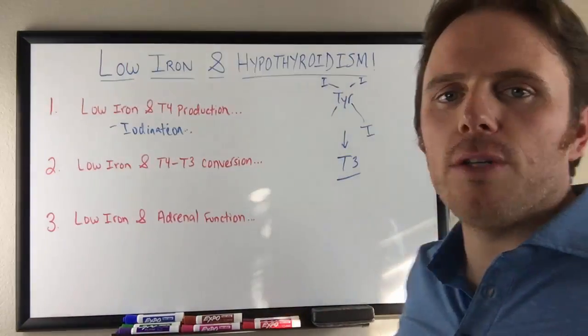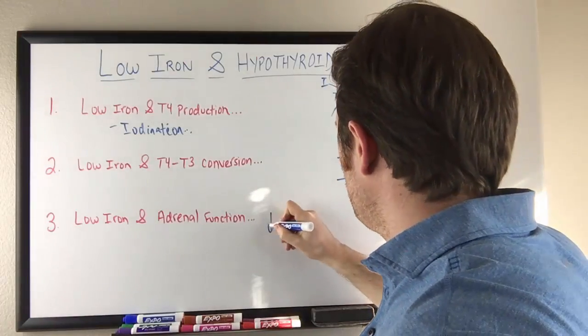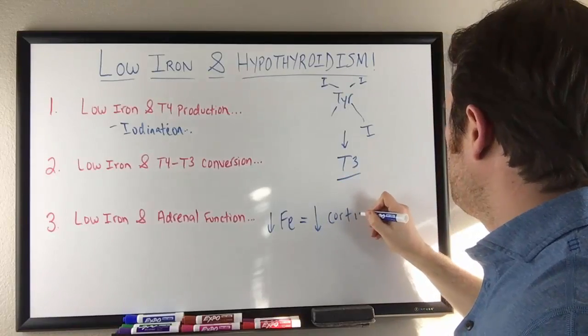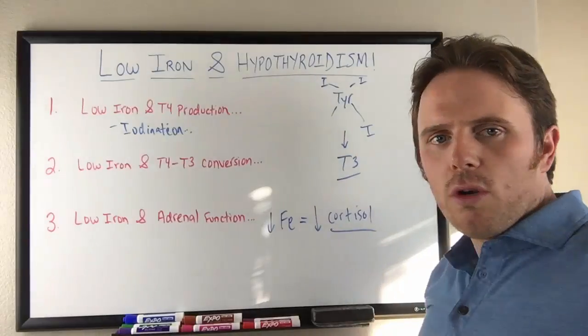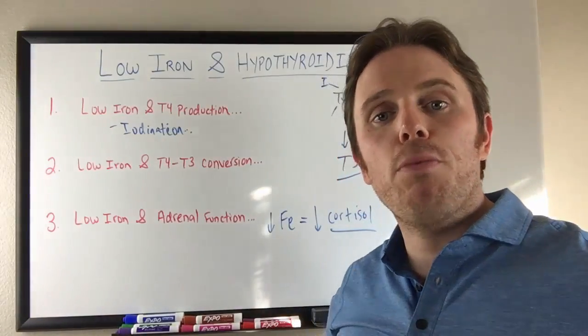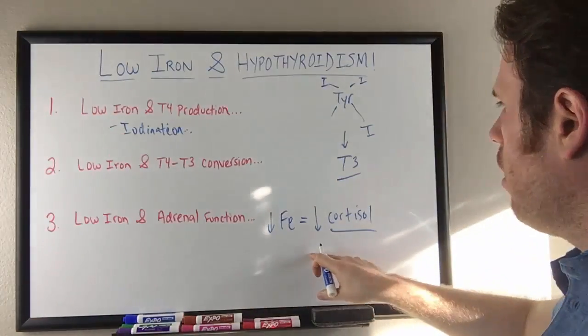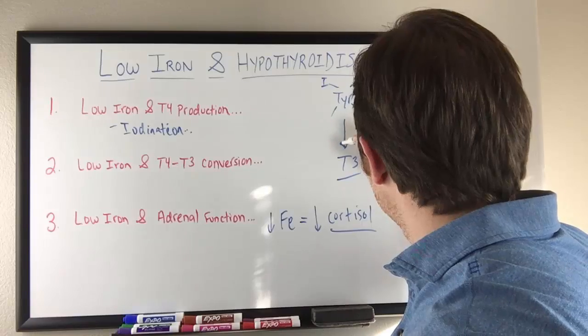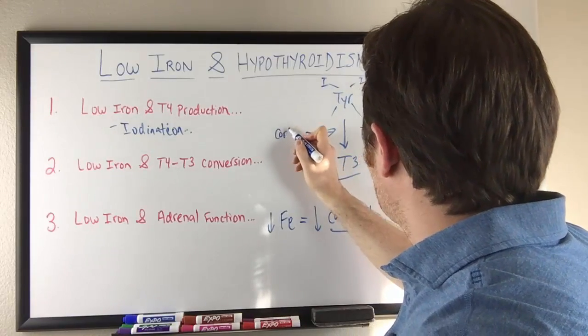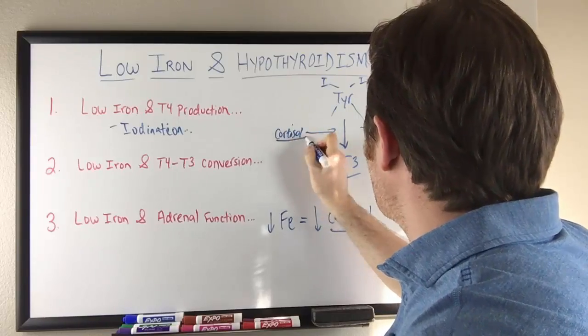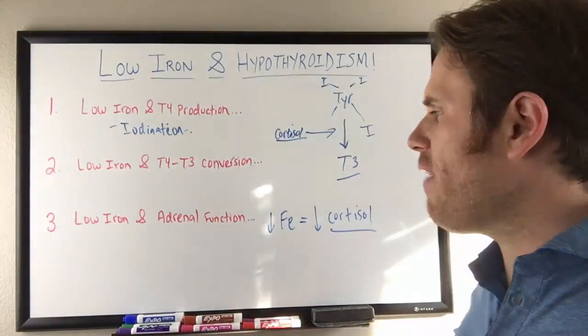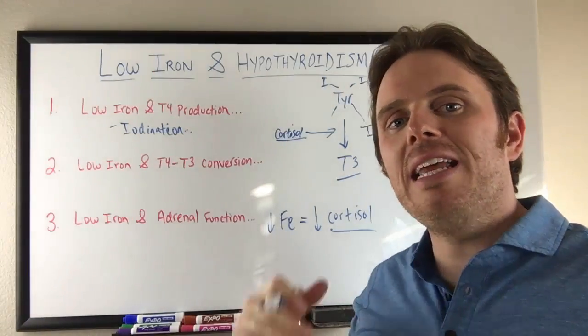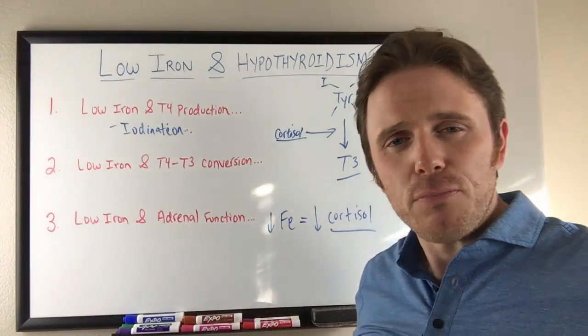Also low iron and adrenal function. There's some research showing there's a correlation with low iron, FE, equals low cortisol. Cortisol is an adrenal corticosteroid hormone produced by the adrenals. So we actually need cortisol to actually activate thyroid hormone. If you go look at the T4 to T3 conversion, one of the big things that's needed in this conversion step is cortisol. So if we don't have enough cortisol, that's going to affect how we convert and activate T4 to T3. It's also going to affect T3 pooling. We need enough cortisol to get T3 into the cell. So we can have T3 pooling and an increase in reverse T3 if we do not have enough iron. So really important.